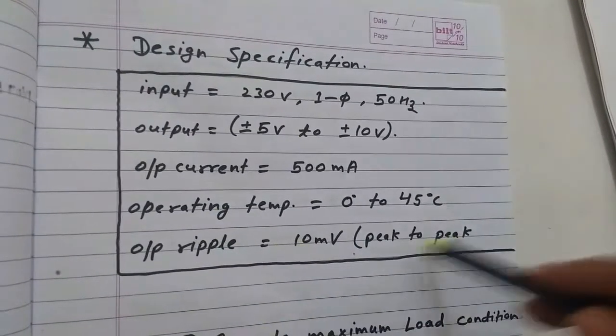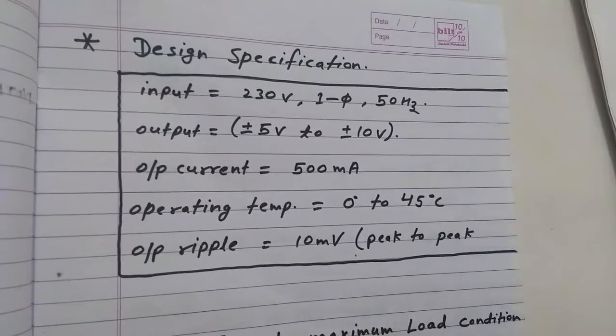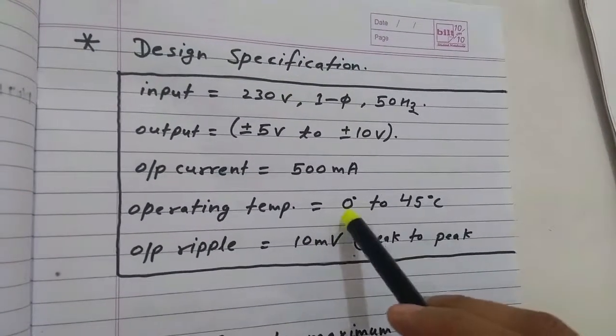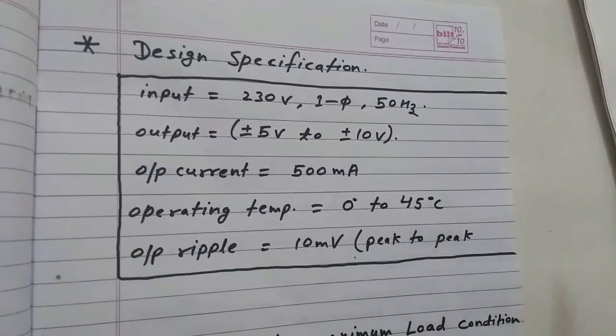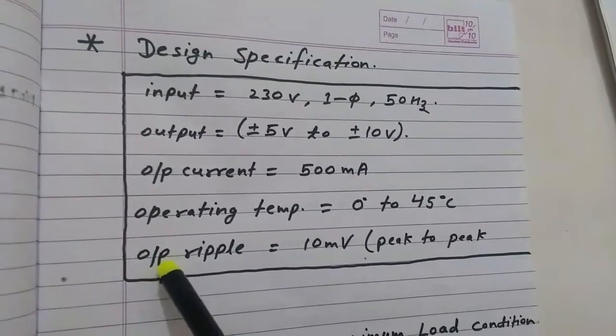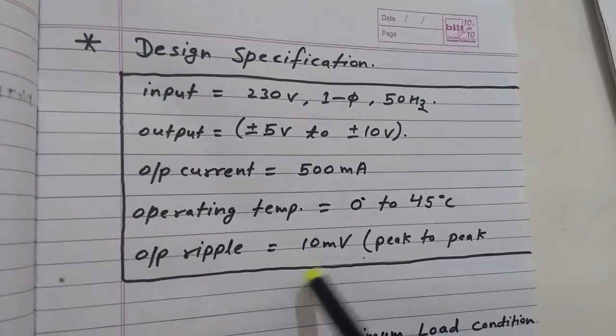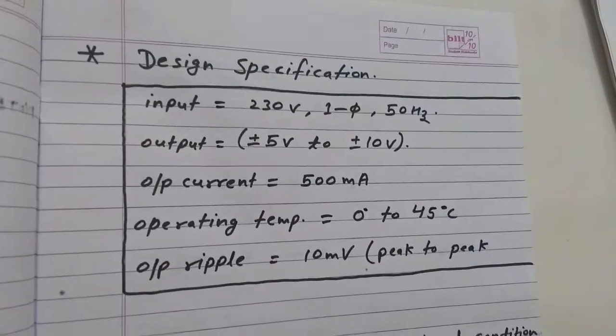The operating ambient temperature for this system should be 0°C to 45°C, and the permissible ripple should be 10 mV peak-to-peak.